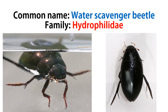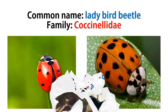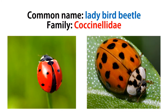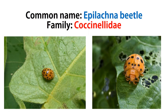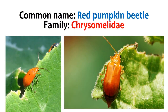Scavenger beetle is in family Hydrophilidae. Water diving beetle is in family Dytiscidae. Ladybird beetle is in family Coccinellidae, and Epilachna beetle is also in Coccinellidae. Tortoise beetle is in family Chrysomelidae, and red pumpkin beetle is also in Chrysomelidae.